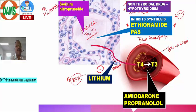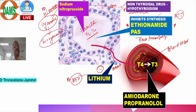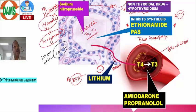Sodium nitroprusside, used for hypertensive emergencies, may also cause hypothyroidism. Sodium nitroprusside contains cyanide; in the body, cyanide is converted to thiocyanate. Thiocyanate inhibits iodine uptake, which ultimately inhibits synthesis of T3 and T4, thereby causing the risk of hypothyroidism. This point should be kept in mind.